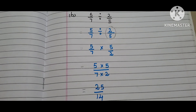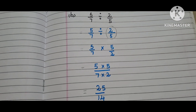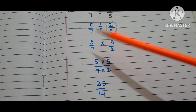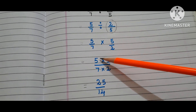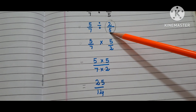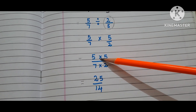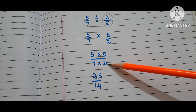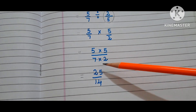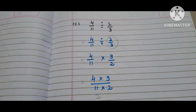Let us move to the B bit. The question is 5/7 divided by 2/5. First, copy down the first fraction 5/7. Instead of the division symbol, write the multiplication symbol and write the reciprocal of 2/5, that is 5/2. That is nothing but 5 times 5 by 7 times 2 — 25 by 14. So, the answer is 25/14.